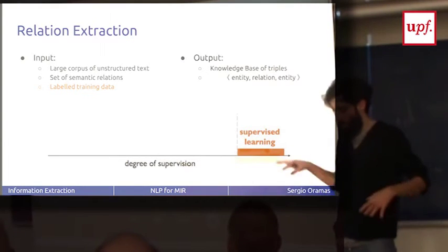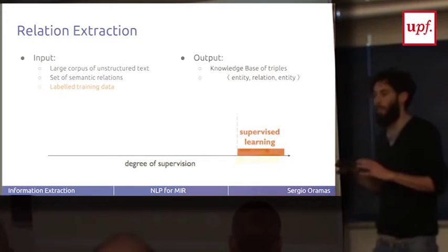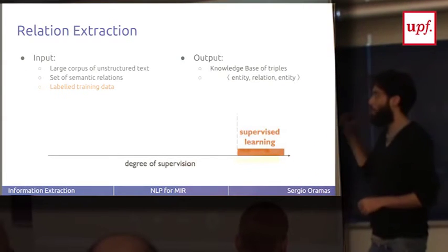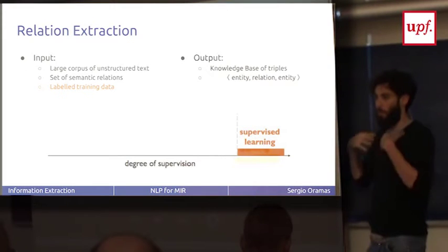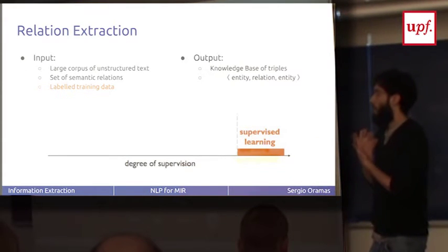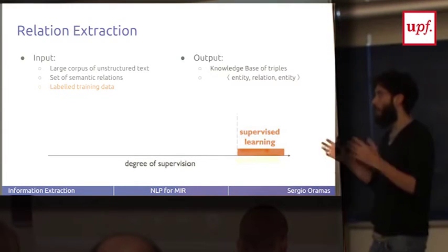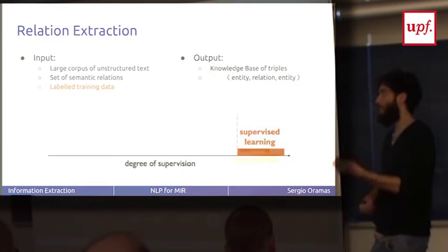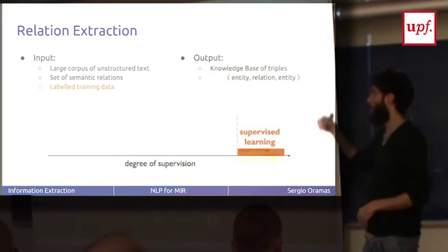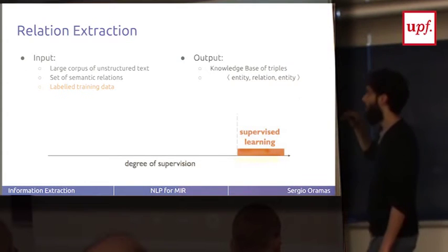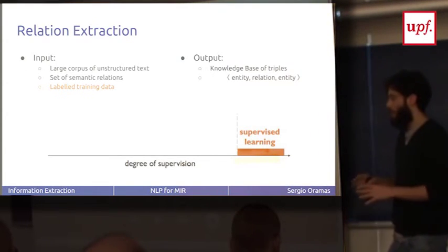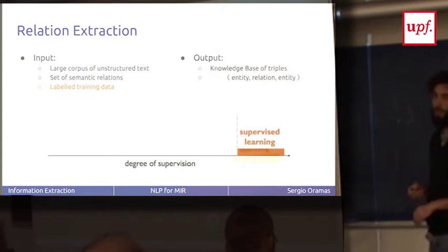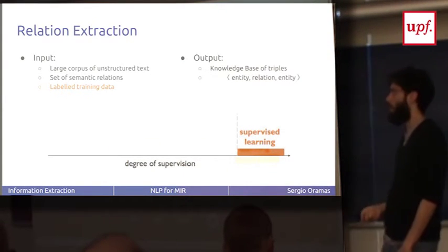Let's illustrate the evolution and different systems for relation extraction. The first approach was supervised learning. The input is you have a large corpus of unstructured text. You want to extract the relations in this corpus. You have a set of semantic relations defined a priori and you have a very big labeled training data with the relations and tables. You train a classifier with the features and the text, and the system is able to output only triples - a collection of triples with the entity, relation, and entity. In the real world, it's super nice if you have this big labeled training data, but this is not always the case. It costs a lot of money and time to annotate relations in text.